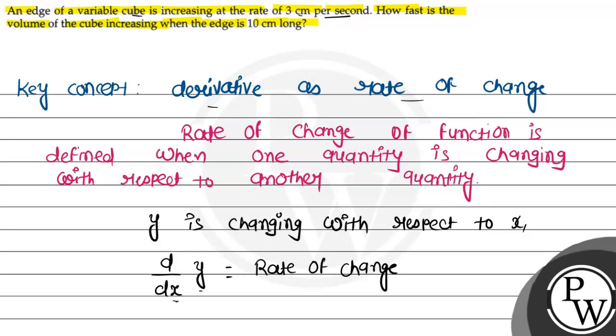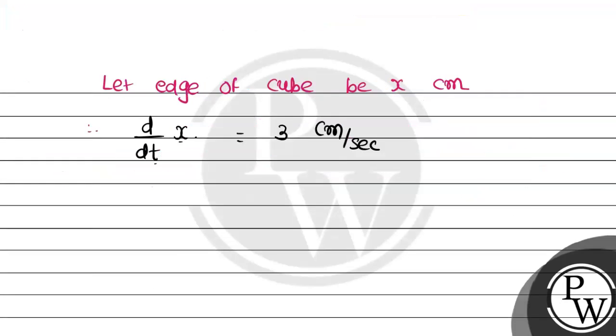How fast is the volume of the cube? The volume of the cube with edge x cm is V = x³.